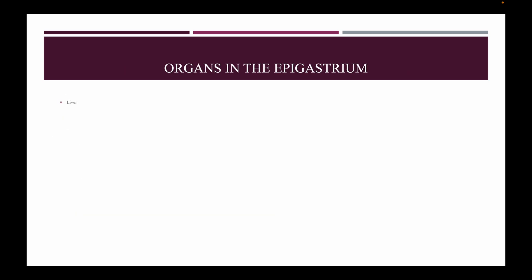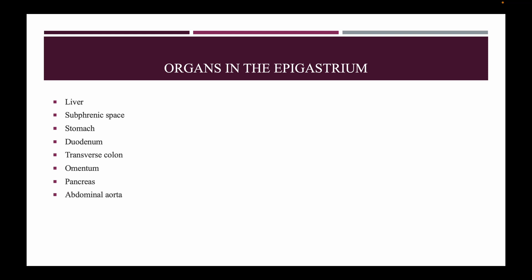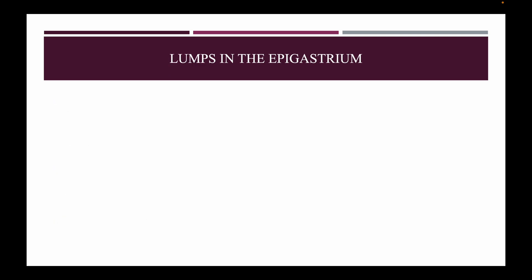Organs in the epigastrium: liver, subphrenic space, stomach, duodenum, transverse colon, omentum, pancreas, abdominal aorta, lymph nodes, and retroperitoneal structures. Lumps in the epigastrium — in the liver and subphrenic space: similar to those in the right hypochondrium.